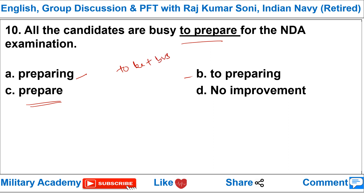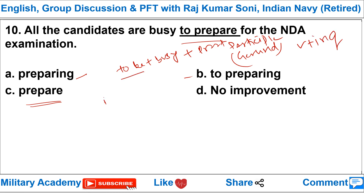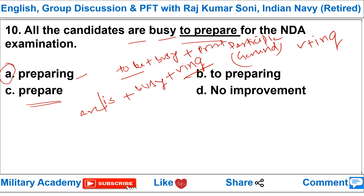The structure is: verb to be (is/am/are) + busy + present participle/gerund. So 'are busy' should be followed by 'preparing', not 'to prepare' or 'prepare'. Option A is correct: 'All the candidates are busy preparing for the NDA examination.' The infinitive form is incorrect in this structure.